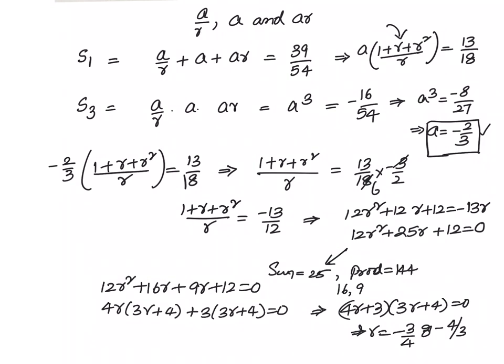Now let's write down the numbers since we know a value and we also know r value. The first number is a/r, next is a (we already know that is -2/3), the last number is a × r, that is -2/3 ×